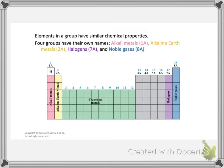There are four groups that have their own names: group 1A, 2A, 7A, and 8A. Note that hydrogen is not considered part of the alkali metals — it doesn't have the same properties. Hydrogen is often referred to as an independent element because it can share some properties of both the alkali metals and the halogens, even though it is in group 1A. Group 2A is the alkaline earth metals, group 7A is the halogens, and group 8A is the noble gases.